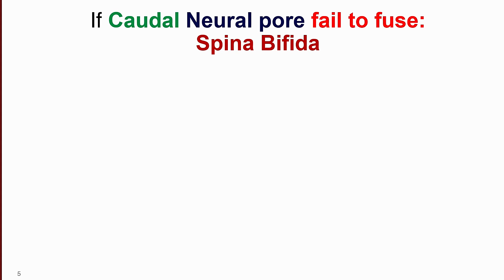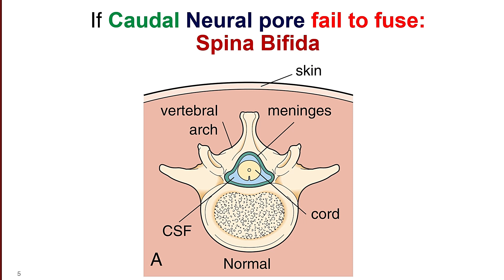Now if there is caudal neural pore failure to fuse, the result is spina bifida. Before understanding spina bifida, we need background knowledge of the normal formation and arrangement of the vertebra and spinal cord. The spinal cord with its leptomeninges — pia mater, arachnoid mater, and outermost dura mater — is enclosed in the vertebral arch. The problem is that if there is failure of fusion of this vertebral arch, the arch becomes bifida, hence the term spina bifida.